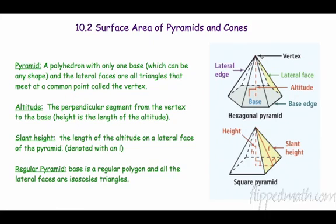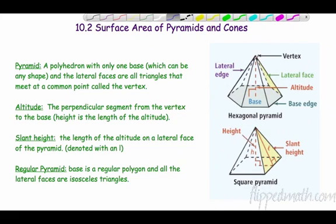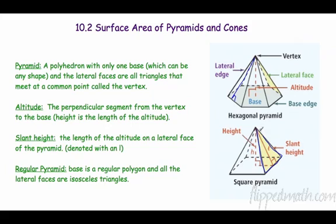The altitude goes from that vertex down to the base. The slant height is the new one — it's the length of the altitude of a lateral face, and we denote it with l. If I have a slant height and I look at the outside of a triangular face, that perpendicular line on the outside of the triangle is the altitude of that triangle.